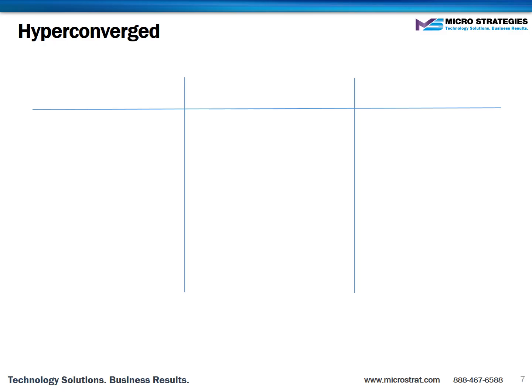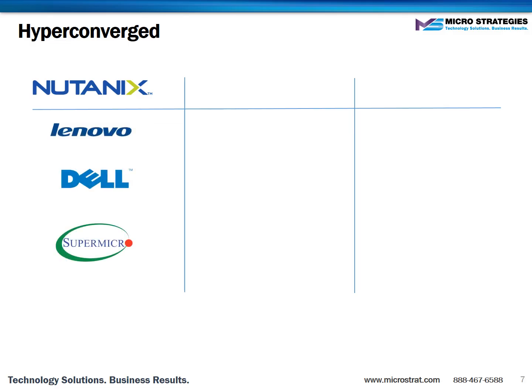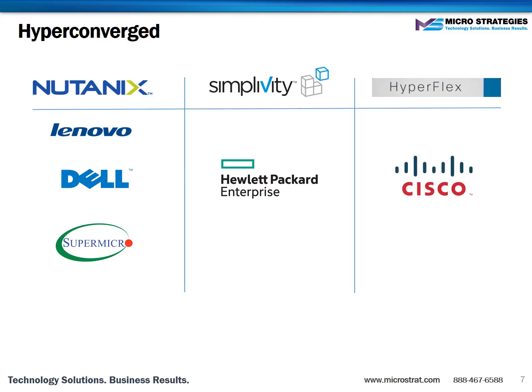In the last few years, hyperconverged has become a huge buzzword in the industry. Some vendors would position hyperconverged as the natural next step in the evolution of the data center. They'll say that traditional was the old way of thinking, converged is more advanced, and hyperconverged is more advanced still. Let's take a look at the architecture to see if that claim holds up. The primary offerings in this space are Nutanix, a software company that partners with Lenovo, Dell, or Supermicro to deliver the solution as an appliance; SimpliVity, who was purchased by HP Enterprise and uses specialty hardware and software to achieve its goals; and HyperFlex, which is an offering by Cisco.